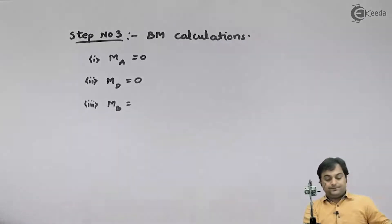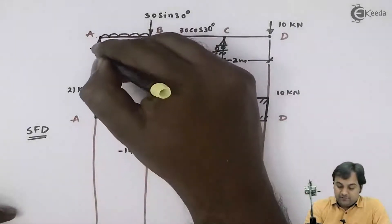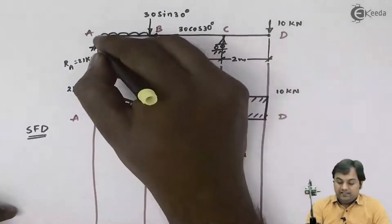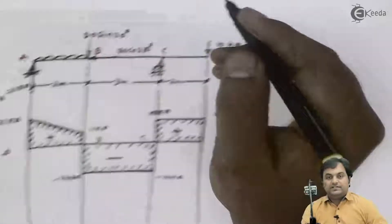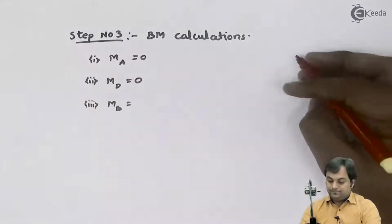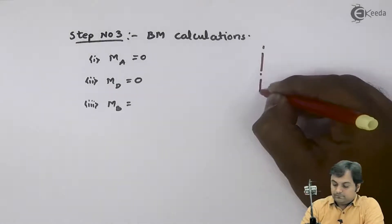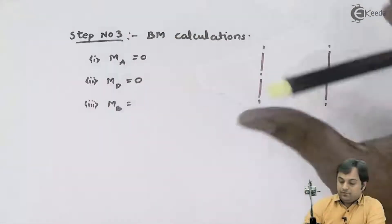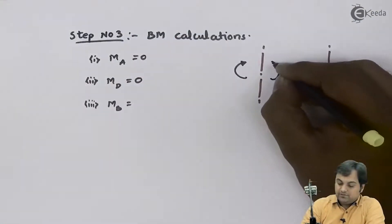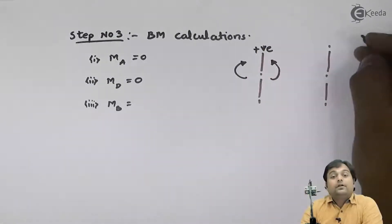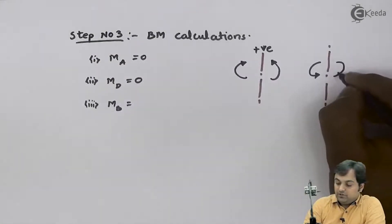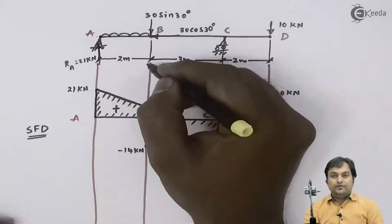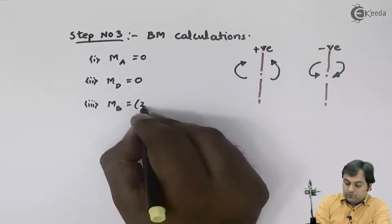At point B, the bending moment is calculated as follows. The reaction at A in the upward direction, Ra, was 21 kN. Taking the moment of Ra about point B gives a clockwise direction. By our sign convention, clockwise moment to the left is positive, so Ra into 2 is positive — that gives 21 into 2.